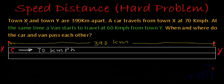And at the same time a van starts to travel at 60 kilometers per hour from town Y. And at the same time a van, I am writing V for van, starts from town Y on the same road towards X at a speed of 60 kilometers per hour. Right?